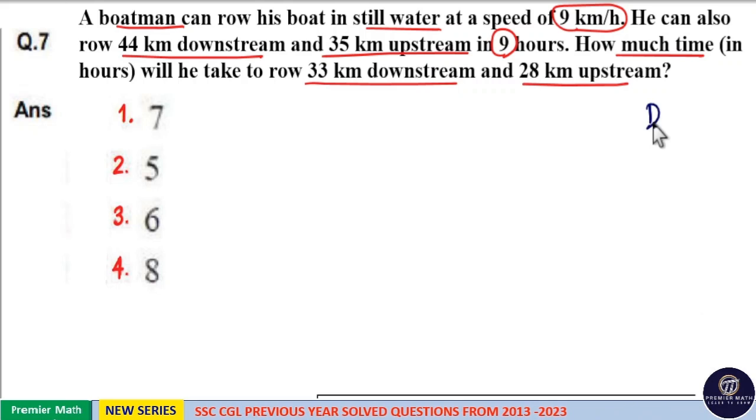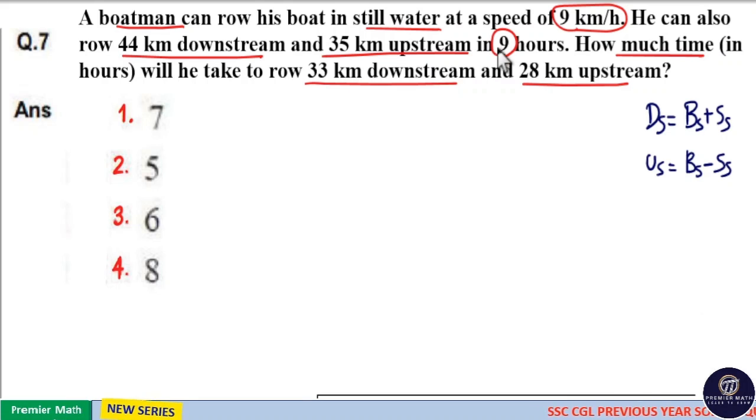Here downstream speed is equal to speed of boat in still water plus speed of stream. Upstream speed is equal to speed of boat in still water minus speed of stream. So 9 hours is the total time taken to cover 44 km and 35 km. Time is equal to distance divided by speed.